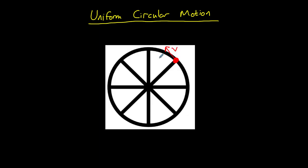How fast is a point on that wheel's rim going? We know that the speed is constant because it's uniform circular motion, so we can use V, speed, equals distance D divided by time T.